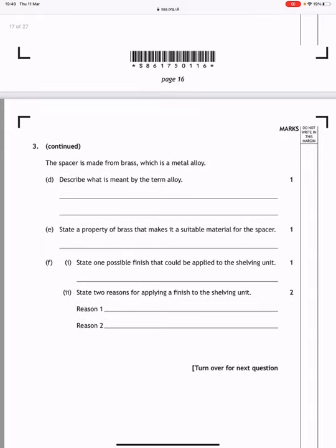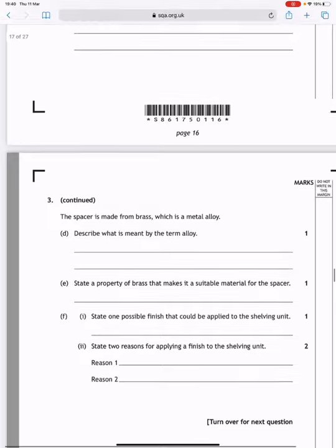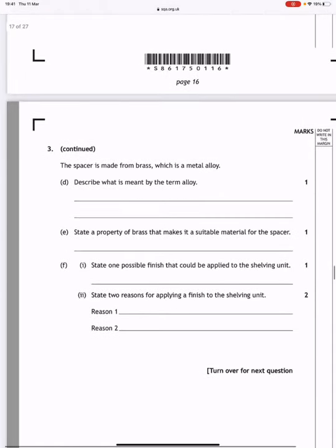State the property of brass which makes it a suitable material for the spacer. In this particular case, brass is an attractive metal, so you would use that for the spacer.